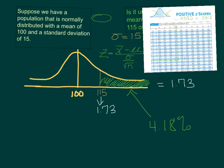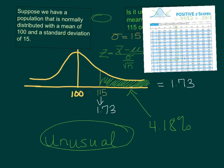So what we are actually looking at here is a probability of 4.18% in the tail. We are looking at a probability of less than 5%, so it would be unusual to have a mean of greater than 115 in a sample of 3 from that population that's normally distributed with a mean of 100 and a standard deviation of 15.